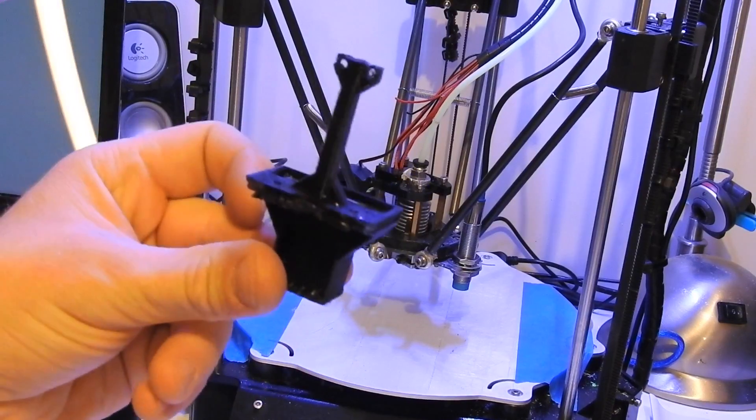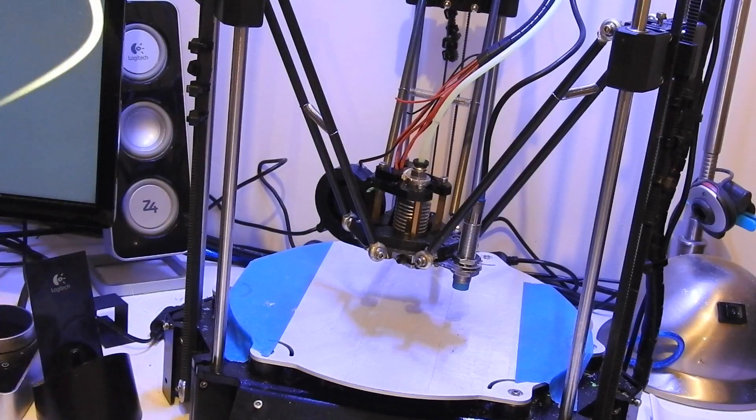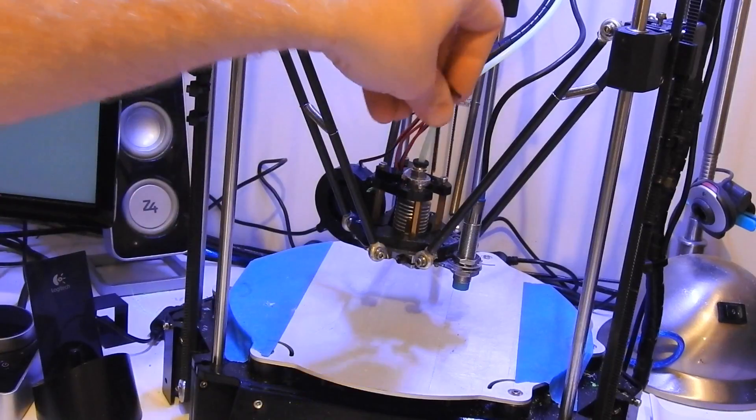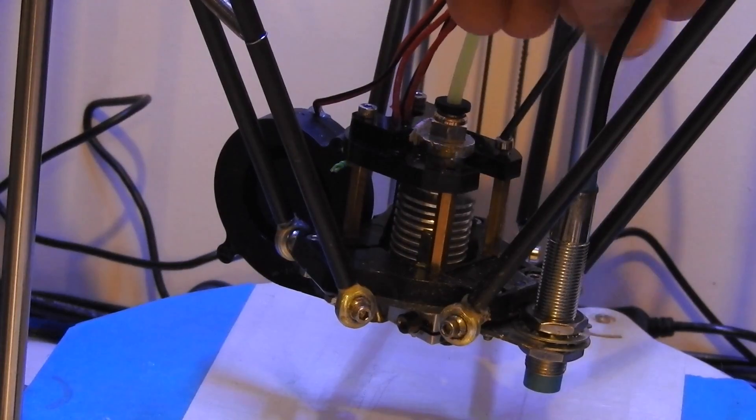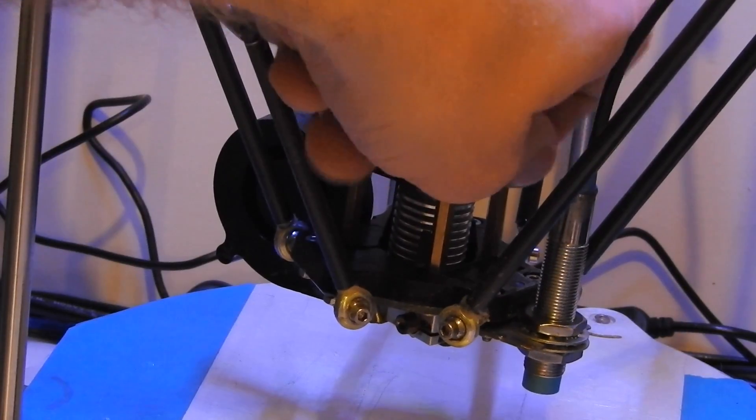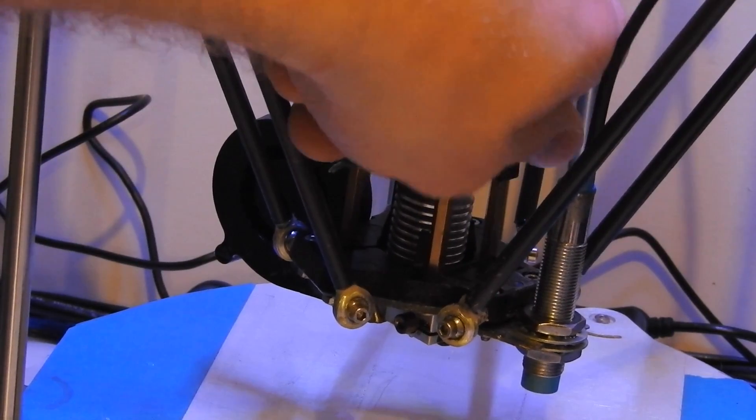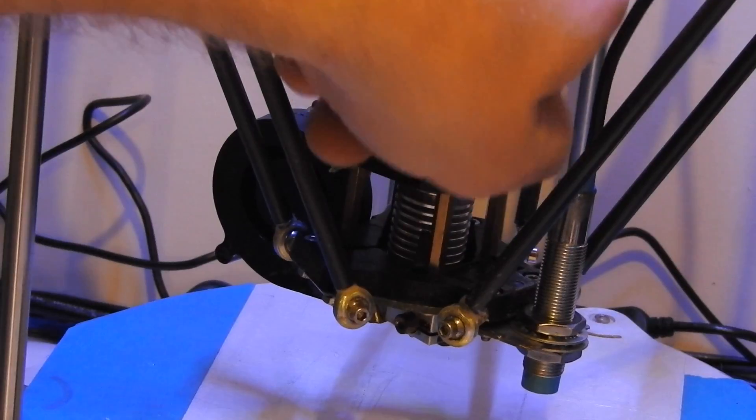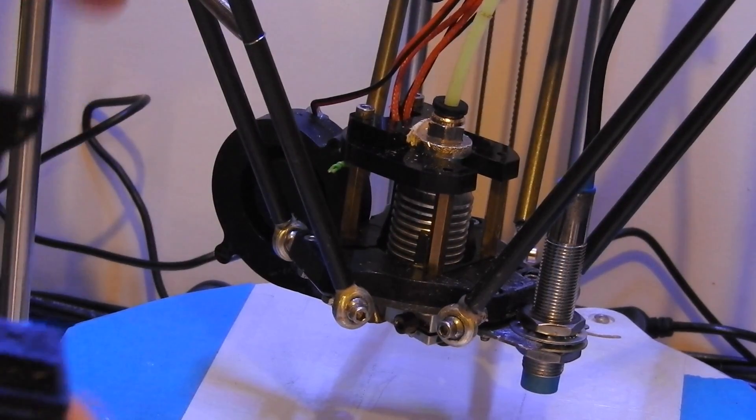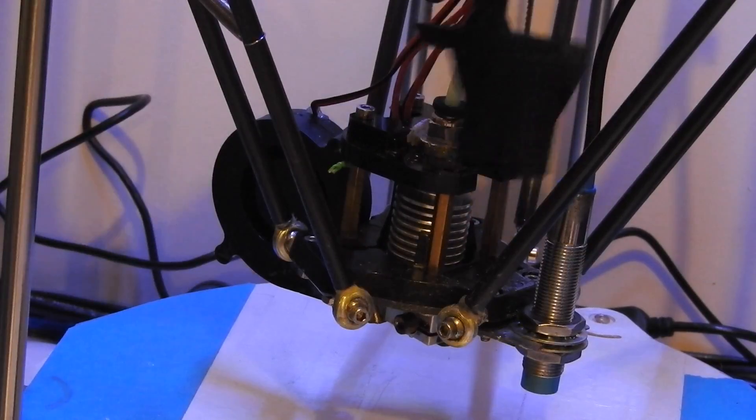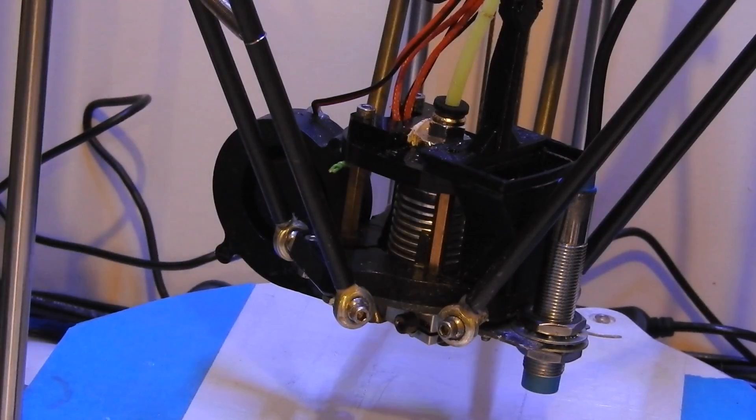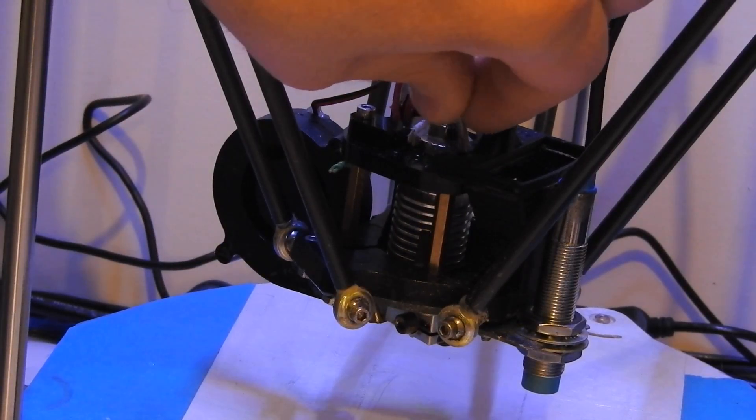Once you've managed to print this, next step is to get a 2 mil allen key and remove the two top screws. Once you've got those screws removed, this sits nicely in place like that. You just put the existing screws back in. Okay so they're done up now.